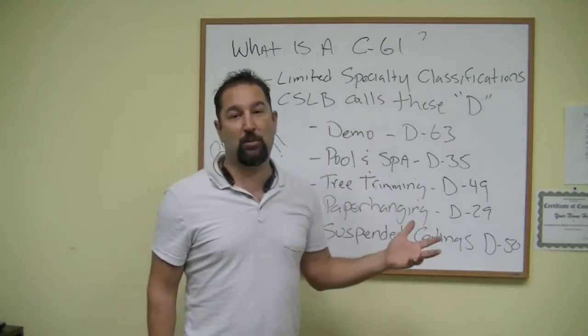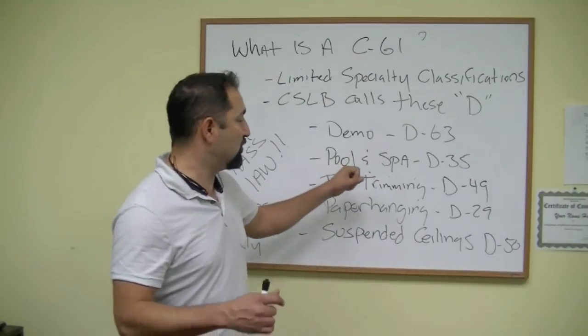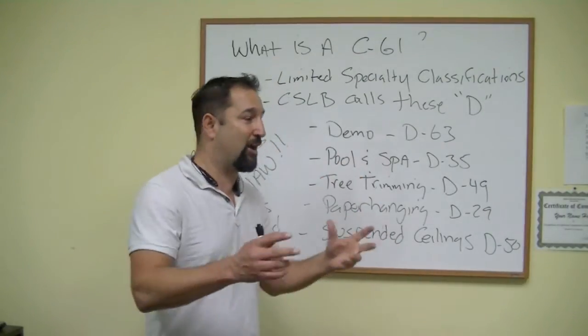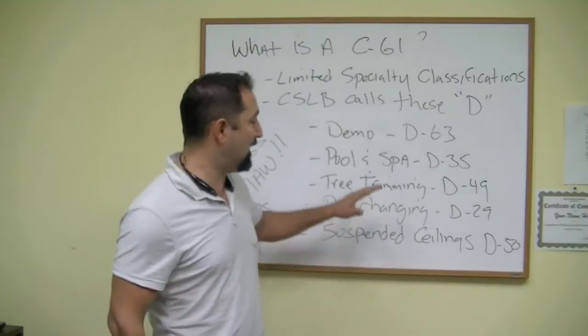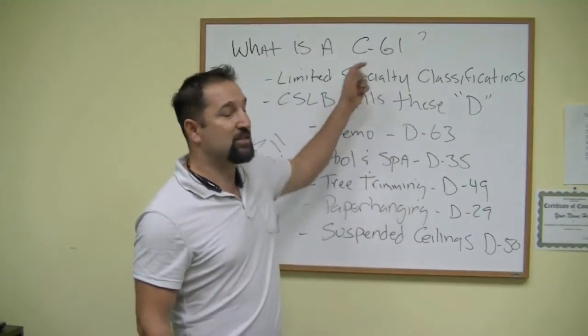So we also have your pool and spa. So if you want to get your pool and spa license so that you can do some repair work on those and take care of that spa that your wife's been bugging you to fill up again, you can get your D35. And that, again, would fall under your C61.